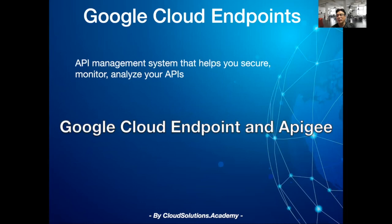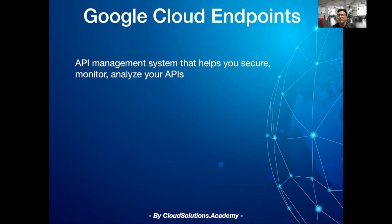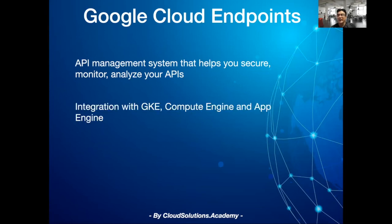The first being Google Cloud Endpoints, another being APG. APG offers much more advanced enterprise features and works across cloud providers. Google Cloud Endpoints natively connects to Google Cloud services like GKE, App Engine, or Virtual Machines, and provides a quick option to expose APIs running on Google Cloud.